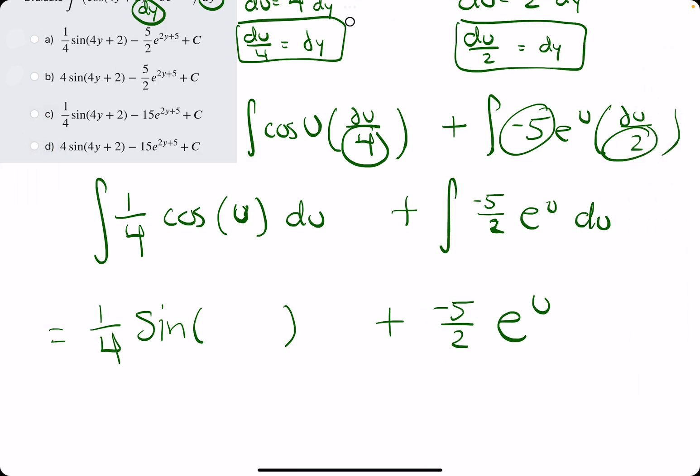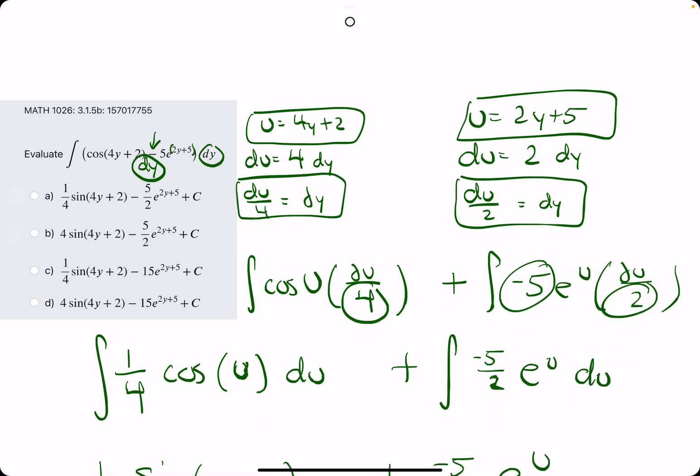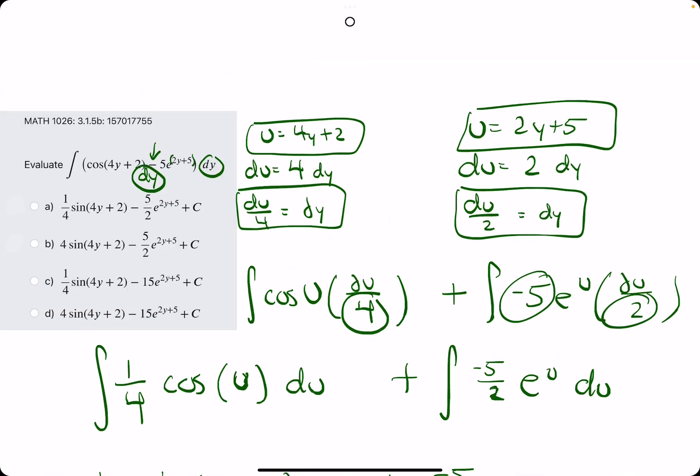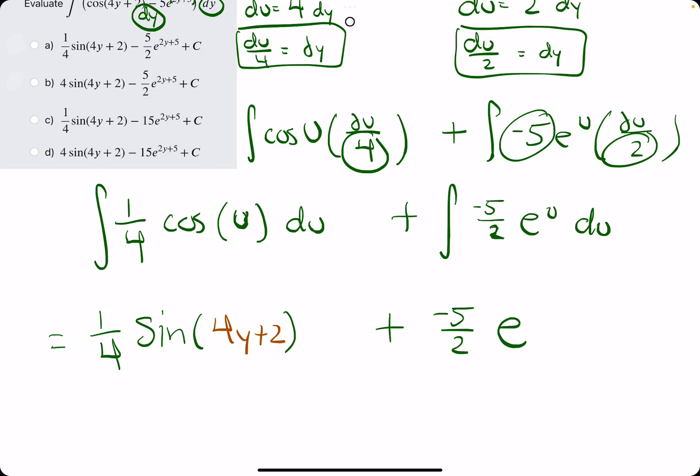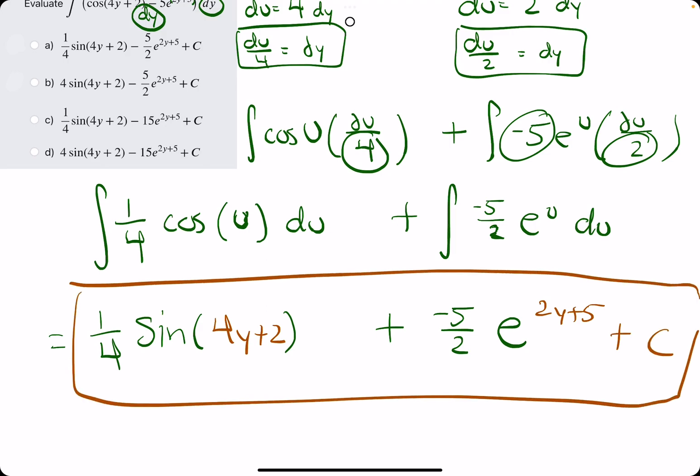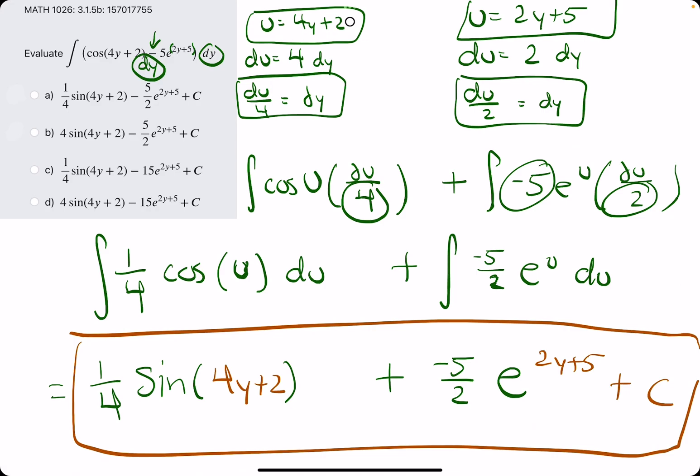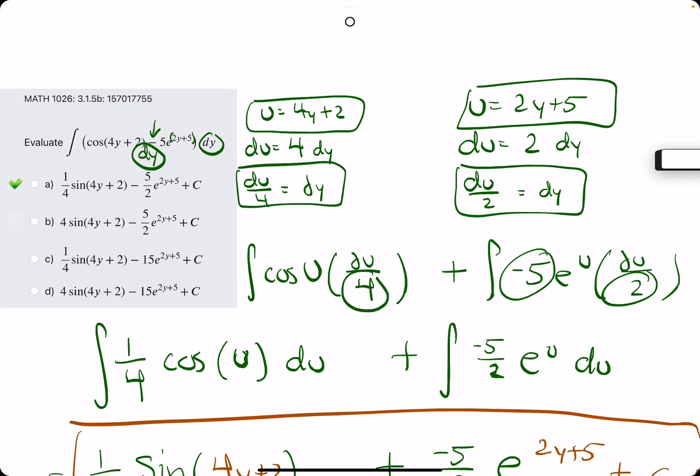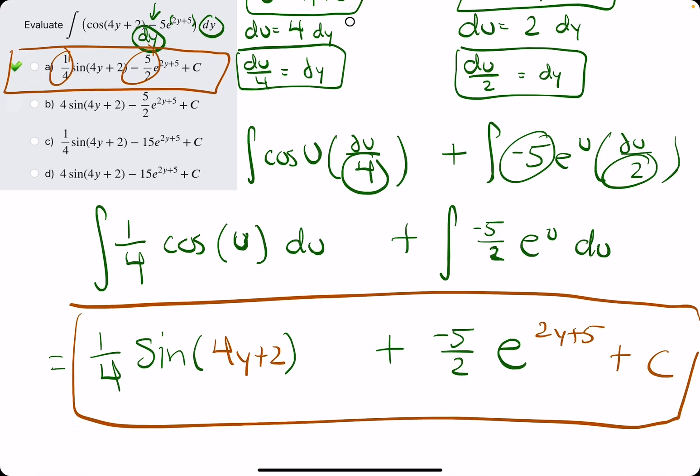So now in place of the first u, we will plug back in the first u, 4y plus 2. Second u, we'll plug back in the second u, 2y plus 5. Just based on the coefficients, we don't have to do this last step, but just to be concise. We have 1/4 sine and negative 5 halves e. 1/4 sine, negative 5 halves e. Looks like option A. 1/4, negative 5 over 2.